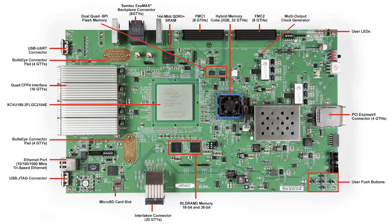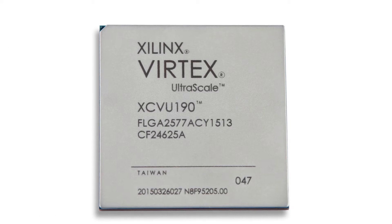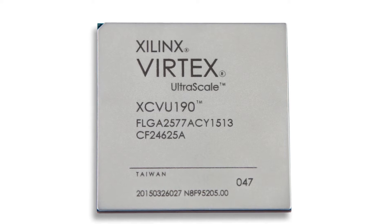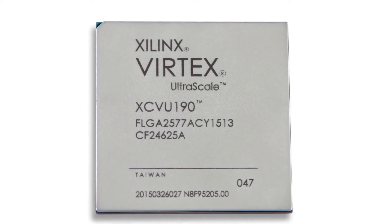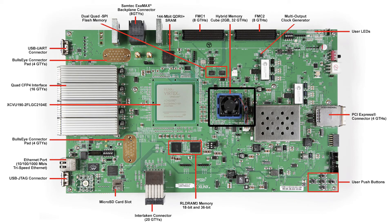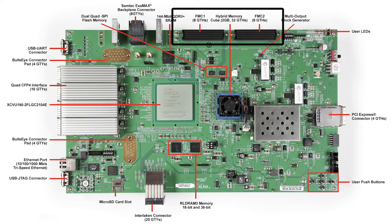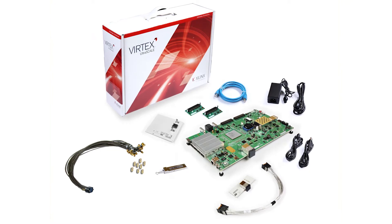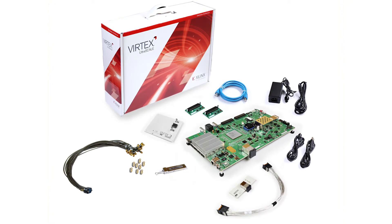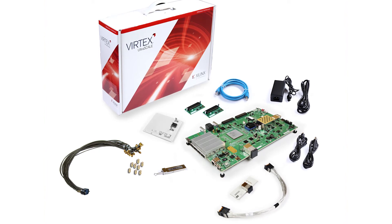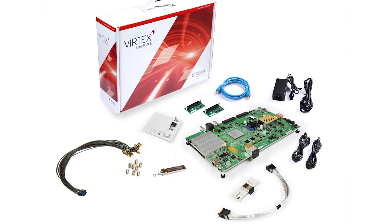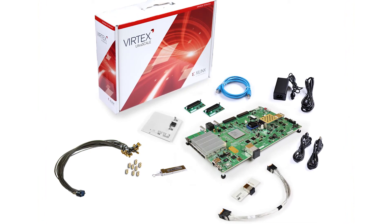Other key VCU-110 board features include the Virtex Ultrascale VU-190 FPGA, HMC serial memory, RO-DRAM-3 memory and dual FMC HPC interfaces for IO expansion. The VCU-110 kit also includes loopback modules, cables and boards to help users accelerate their design cycle.